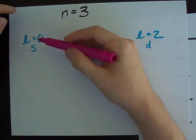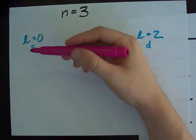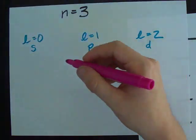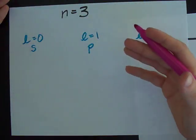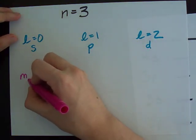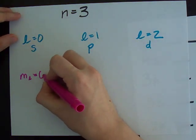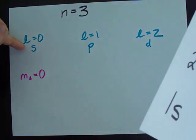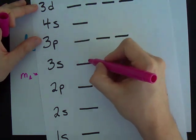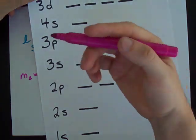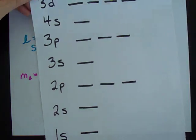Now, when L equals zero, ML can go from negative L to positive L, or in this case, plus zero to minus zero, which is really only zero. That's the only option here. ML has to be zero. So, each S orbital only gets one of these dashes in the electron energy diagram. Each S can only hold two electrons.